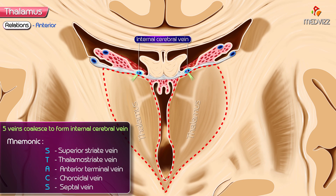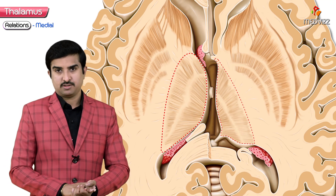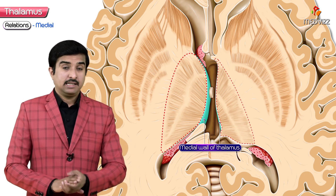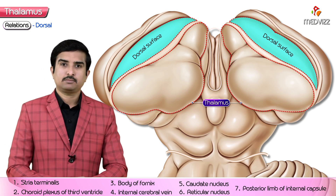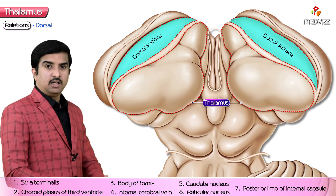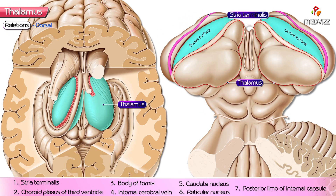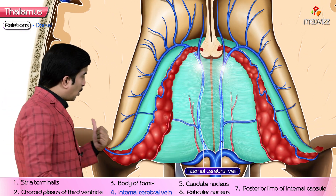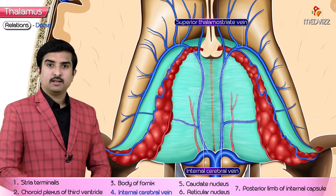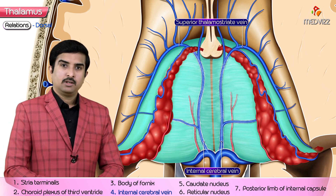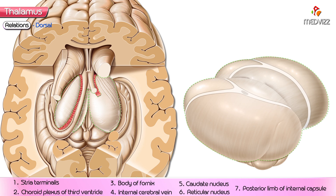The medial wall of each thalamus forms the lateral wall of the third ventricle. Regarding dorsal relations, the dorsal surface of the thalamus is in close proximity to the stria terminalis, the choroid plexus of the third ventricle, and the body of the fornix. The internal cerebral vein courses along the dorsomedial length of the thalamus, while the superior thalamostriate vein runs along the dorsolateral surface.